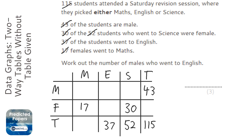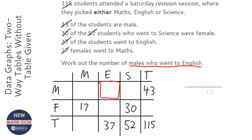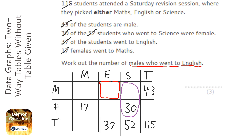So we've got to figure out which cell we're trying to find. It asks for males who went to English, so we're trying to find this box here. Now you can complete the entire two-way table, but we don't need to — we just need to find out what that number is. The first thing I'm going to look at is the fact that these two cells here — male science and female science — add together to make 52.